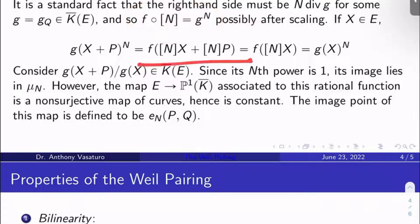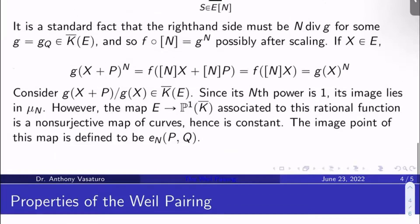Now, what is f of multiplication by N of X plus multiplication by N of P? Well, what's multiplication by N of P? P is an N torsion point, right? So that's zero. So this is just f of multiplication by N of X. But what's f of multiplication by N of X? It's g(X) to the N, because again, g to the N is f composed multiplication by N. And so we see here that g to the N, its argument is invariant under translation by P some point in the N torsion of E.